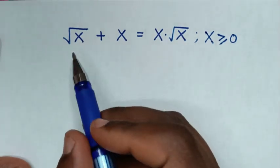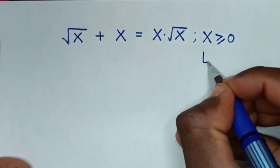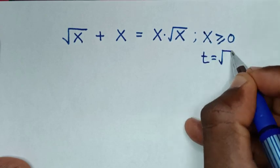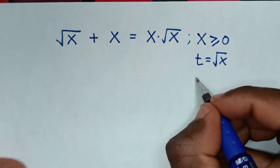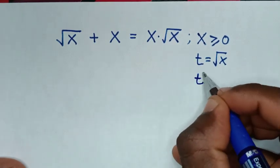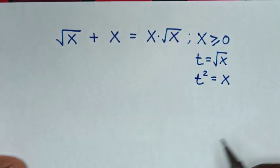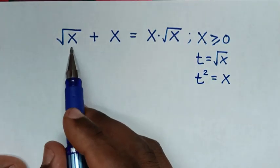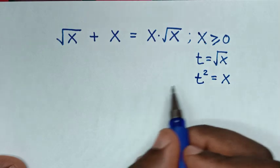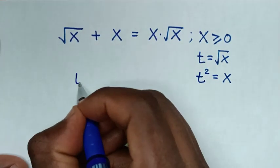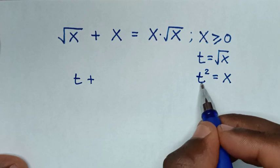From here, for the square root of x terms, we let t equal to square root of x. So when we square on both sides, it will be t squared is equal to x. Therefore, square root of x is t, and x is t squared. So the equation becomes t plus t squared equals t squared.